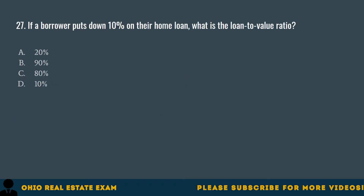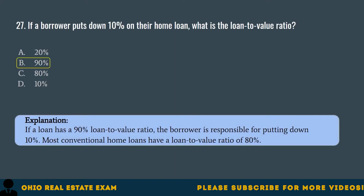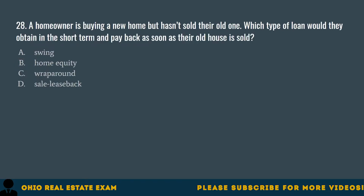Question 27. If a borrower puts down 10% on their home loan, what is the loan-to-value ratio? A. 20%. B. 90%. C. 80%. D. 10%. The correct answer is B. 90%. If a loan has a 90% loan-to-value ratio, the borrower is responsible for putting down 10%. Most conventional home loans have a loan-to-value ratio of 80%.